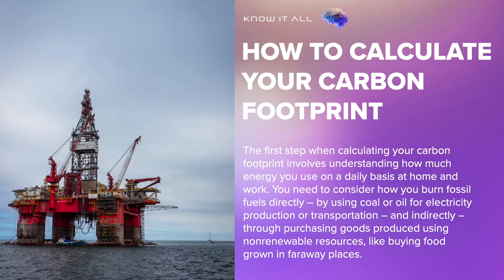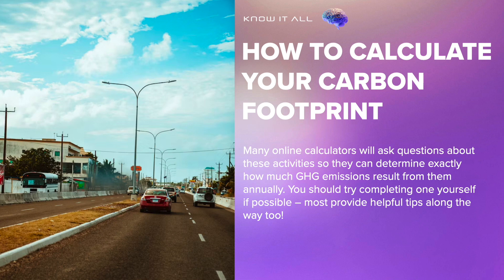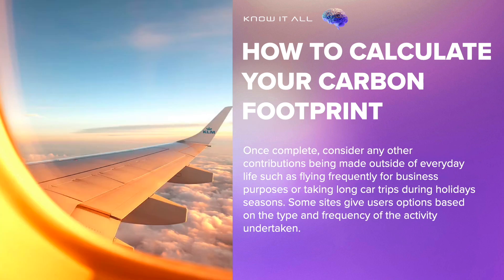You need to consider how you burn fossil fuels directly, by using coal or oil for electricity production or transportation, and indirectly, through purchasing goods produced using non-renewable resources, like buying food grown in faraway places. Many online calculators will ask questions about these activities so they can determine exactly how much GHG emissions result from them annually. You should try completing one yourself if possible — most provide helpful tips along the way too. Once complete, consider any other contributions being made outside of everyday life such as flying frequently for business purposes or taking long car trips during holiday seasons.